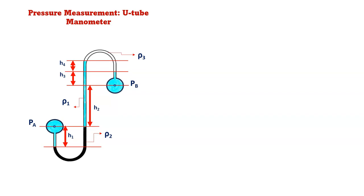Today I will talk about pressure measurement by U-tube manometer. One multi-fluid manometer is connected with two pipes. One pipe is pipe A, with center pressure P_A and fluid density rho_1. The other pipe is pipe B, with center pressure P_B and fluid density also rho_1.